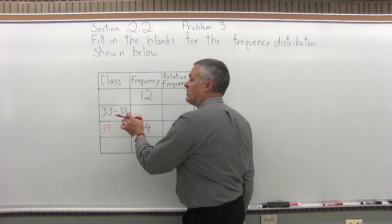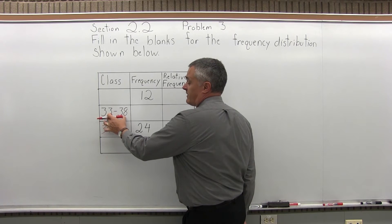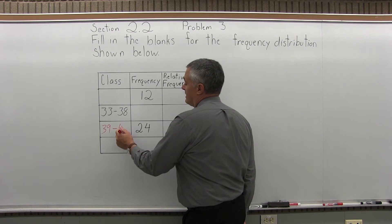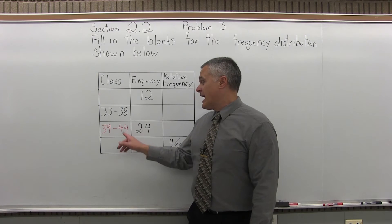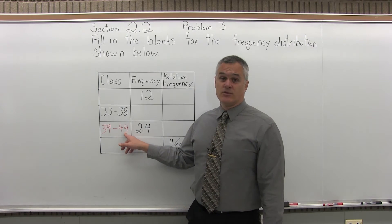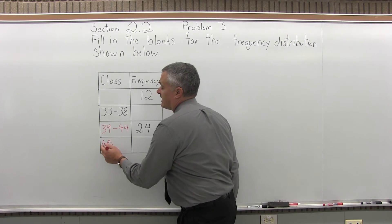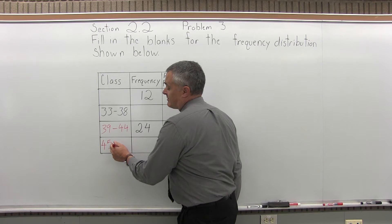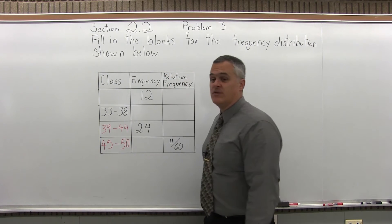The classes should be the same width. To go from the starting point to the ending point of the given class, I add 5: 33 plus 5 is 38. So for the next one I also add 5: 39 plus 5 is 44. Same process — no gap and no overlap — if one ends at 44, the next must begin at 45, and 45 plus 5 gives me 50.